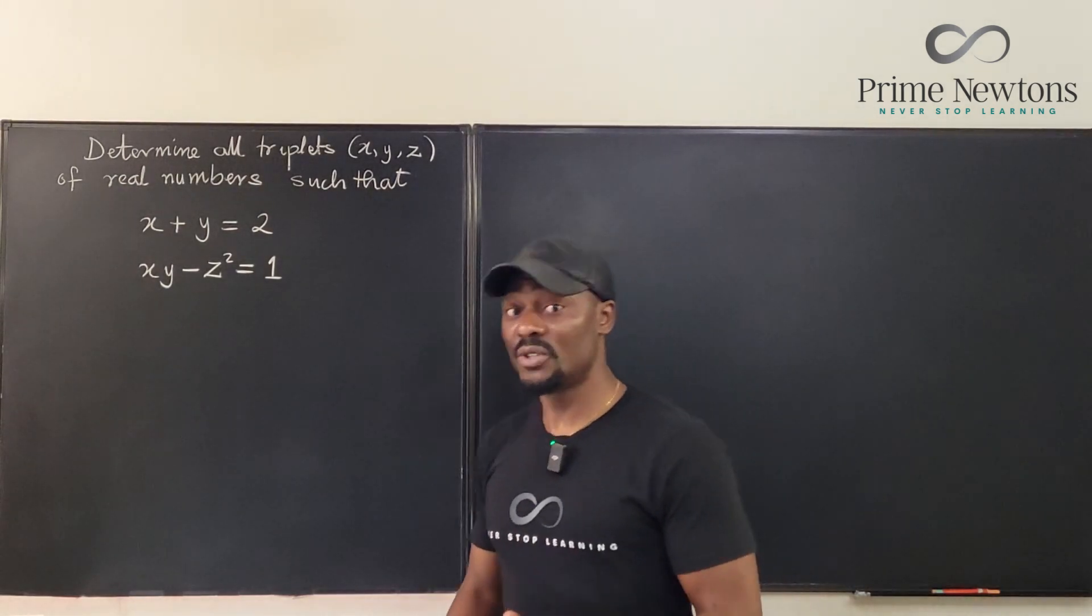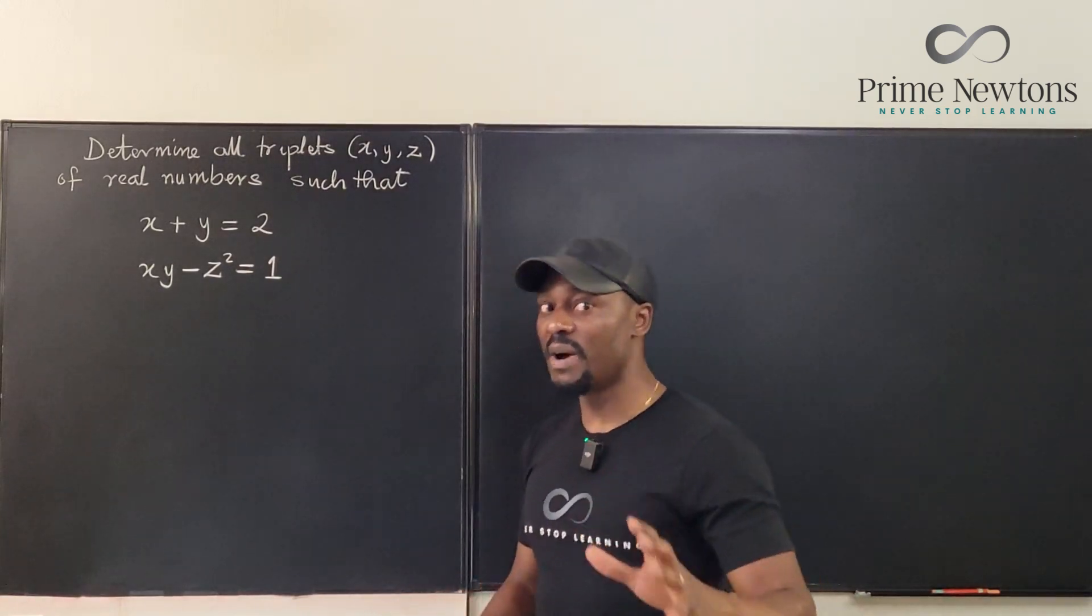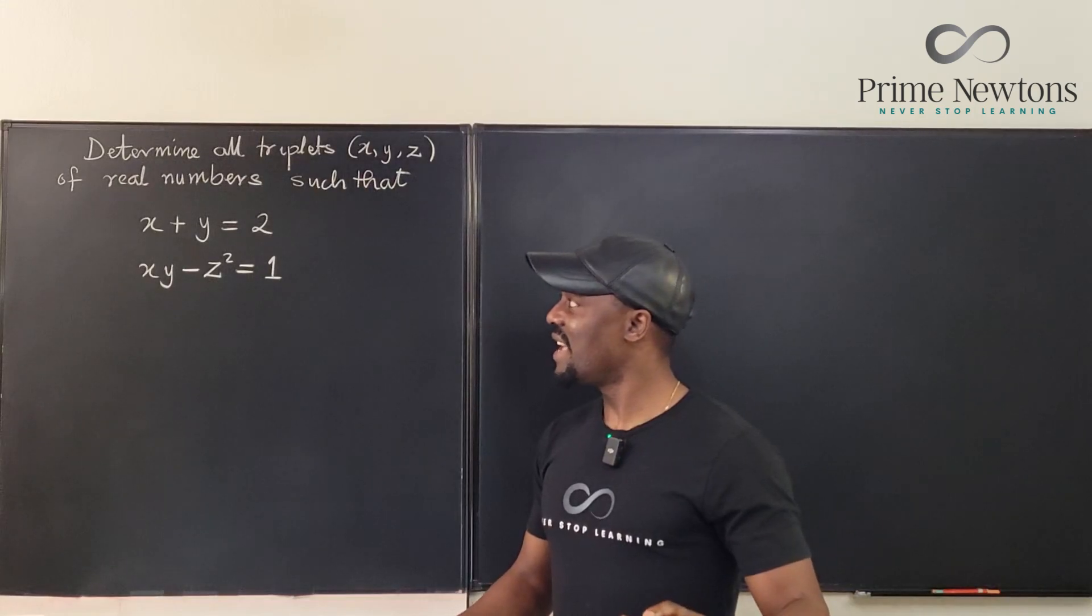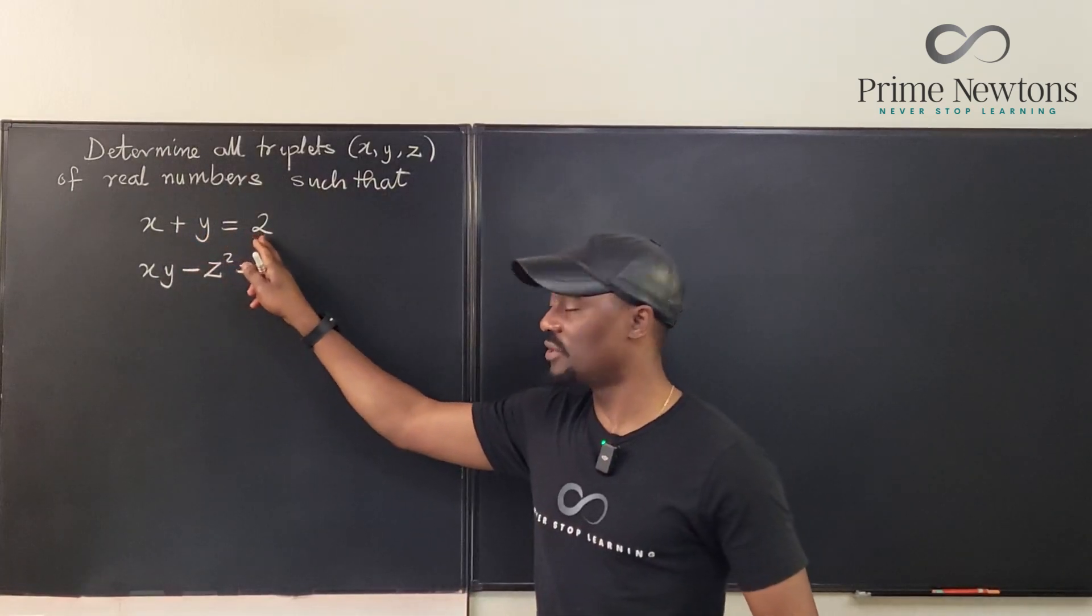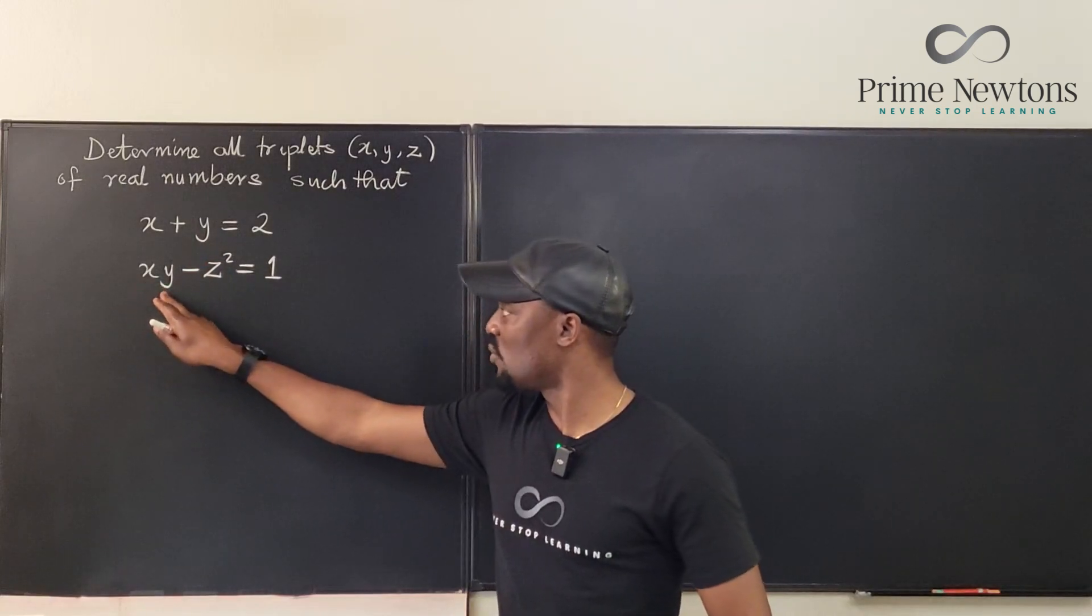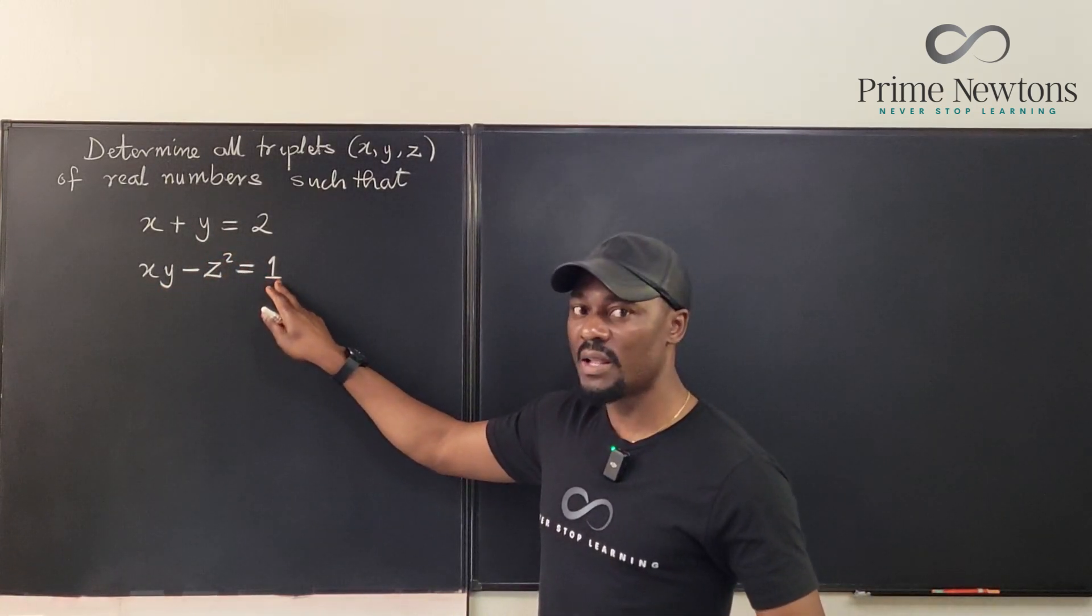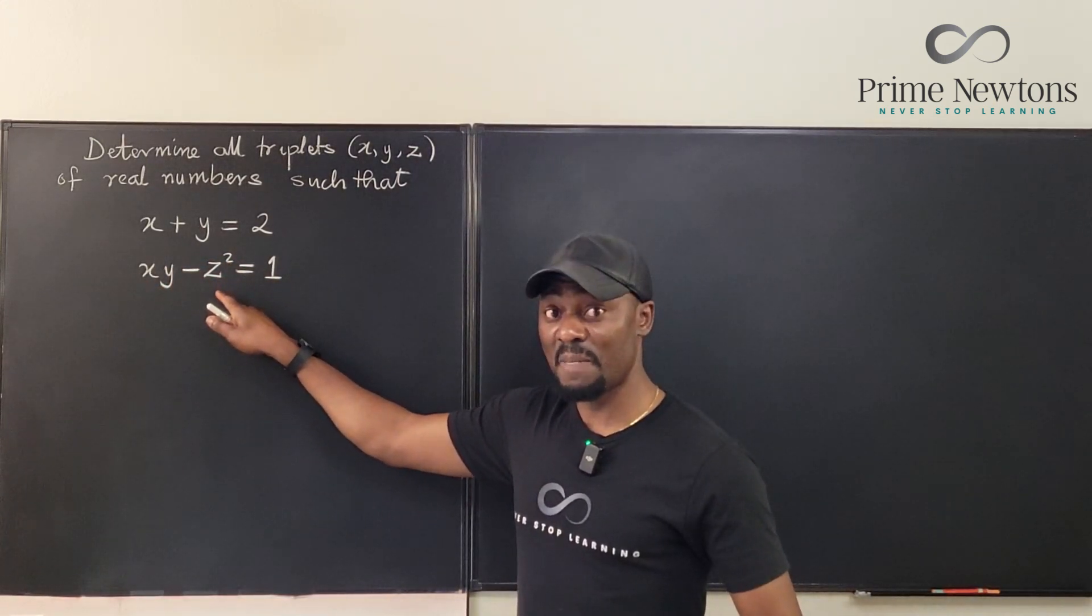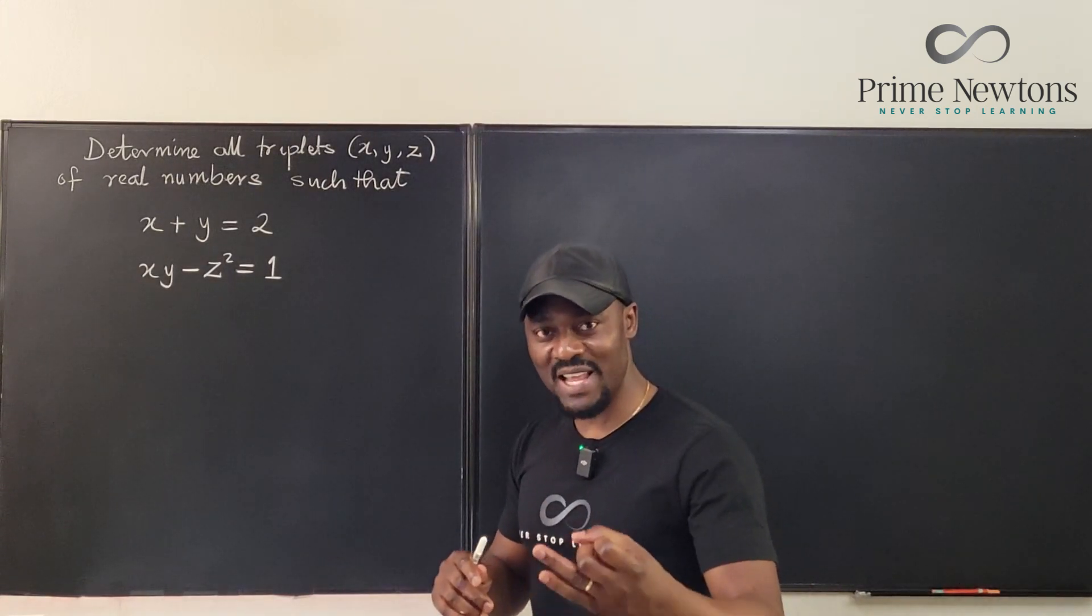Because this is a competition problem, it might not be as easy as you think, but just by inspection, my favorite method of solving problems, I can assume that x equals 1 and z equals 1, so that 1 plus 1 equals 2. If x is 1 and y is 1, I can have 1 times 1 equals 1, so 1 minus z squared equals 1. That means z squared must be 0, so z is 0. I already found one set: x equals 1, y equals 1, and z equals 0.